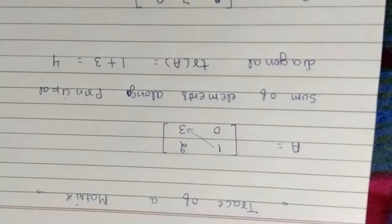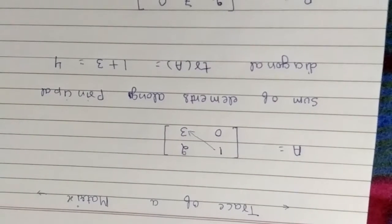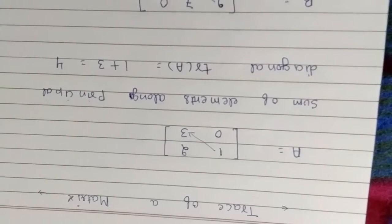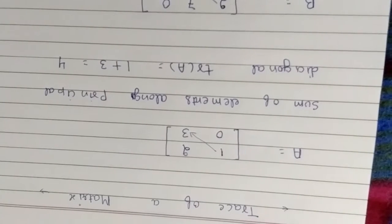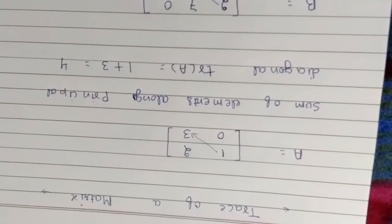So trace A will be, you have to just add the diagonal elements, that will be 1 and 3. So trace of A will be 1 plus 3 is equal to 4.